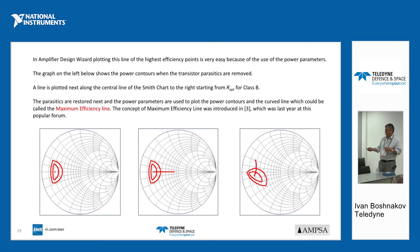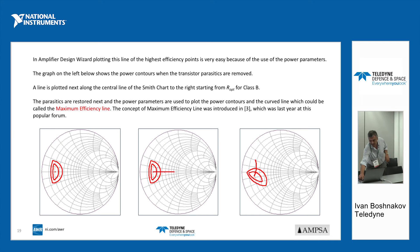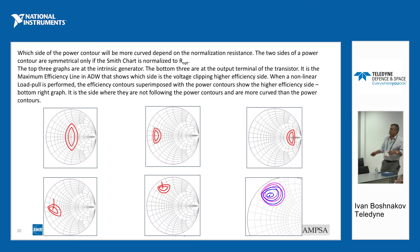At the intrinsic generator, with transistor parasitics stripped, the constant power contours are visible. Drawing the line through their tangent points and then accounting for parasitics at the output gives a curve we call the maximum efficiency line — introduced at this forum last year, now presented with more basic explanations. When the Smith chart is normalized at R-optimum the contours are symmetrical; at lower R-optimum, voltage clipping curves become more pronounced. Adding parasitics shifts the curves, and at high frequency, because lines are closely spaced and sensitivities are larger, the transistors naturally tend toward class B operation.